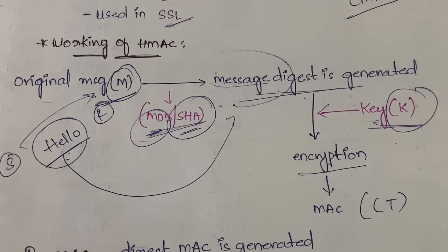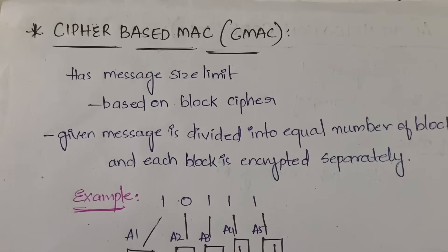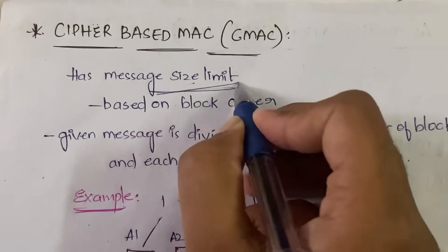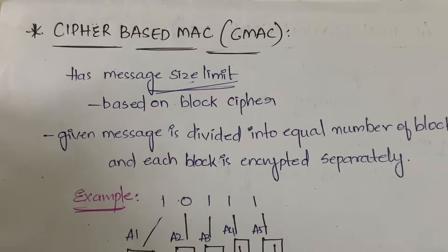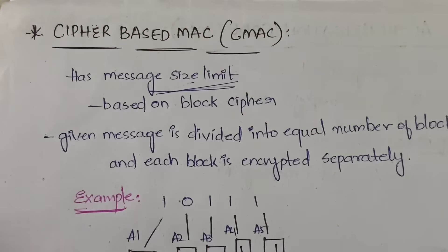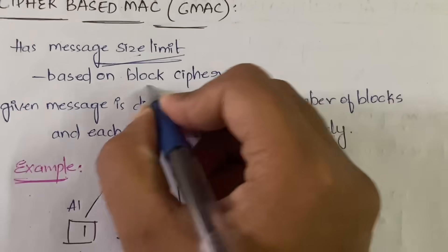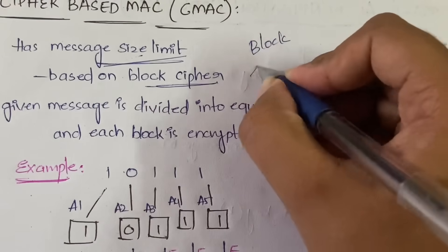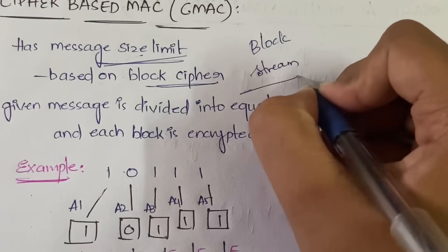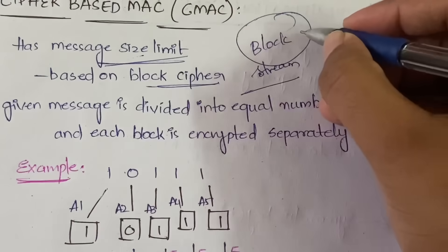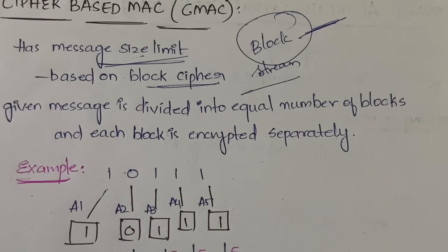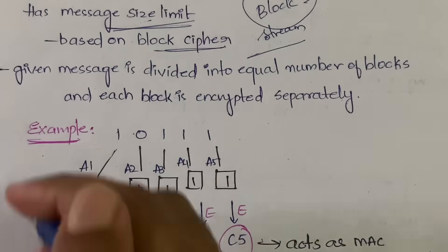Now let us understand CMAC - cipher-based MAC. Unlike HMAC or normal MAC, it has a message size limit; you can only process messages within a particular size. CMAC is an algorithm based on block cipher. I have already explained block cipher and stream cipher in previous videos, so cipher-based MAC depends on block cipher algorithms.